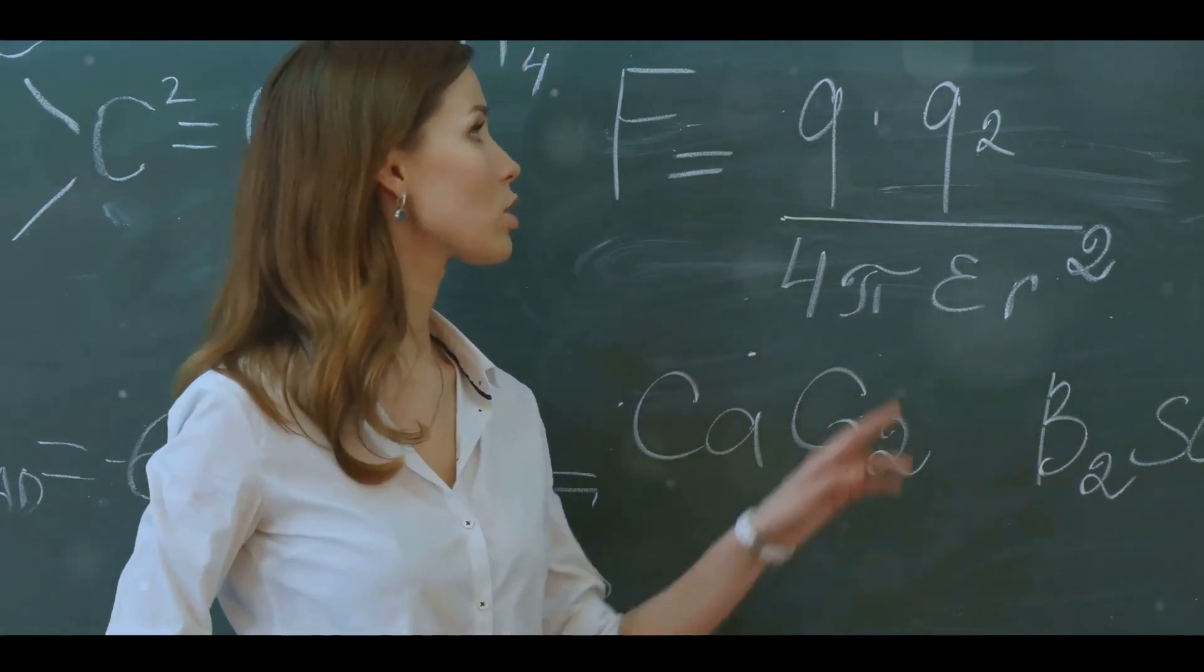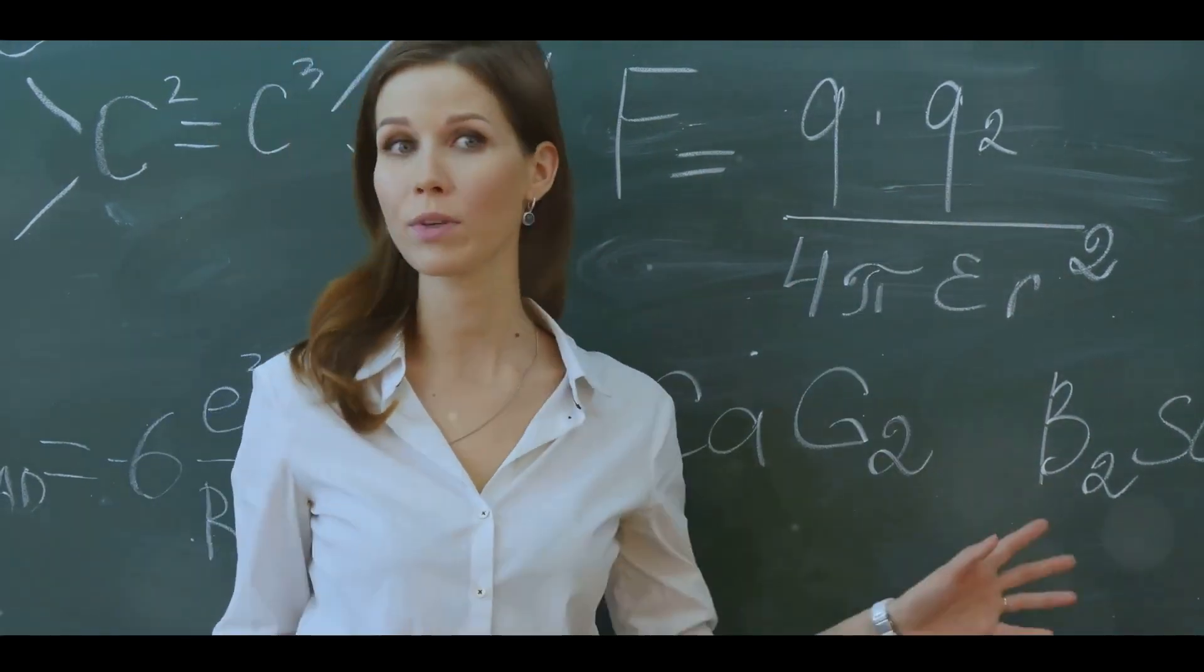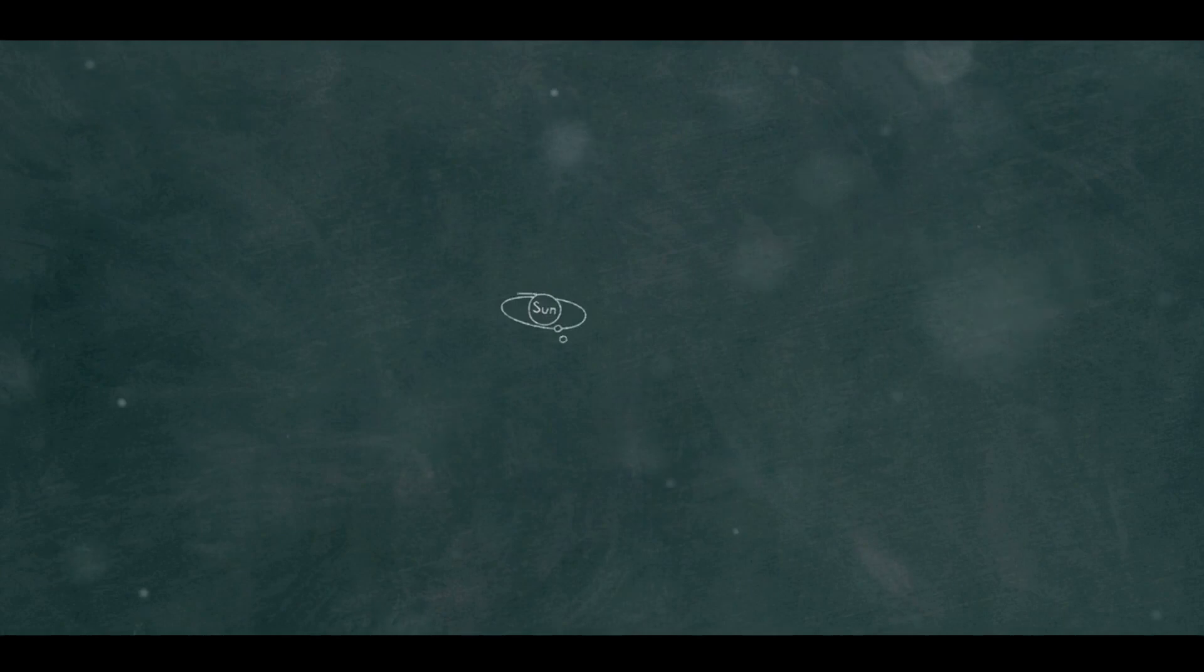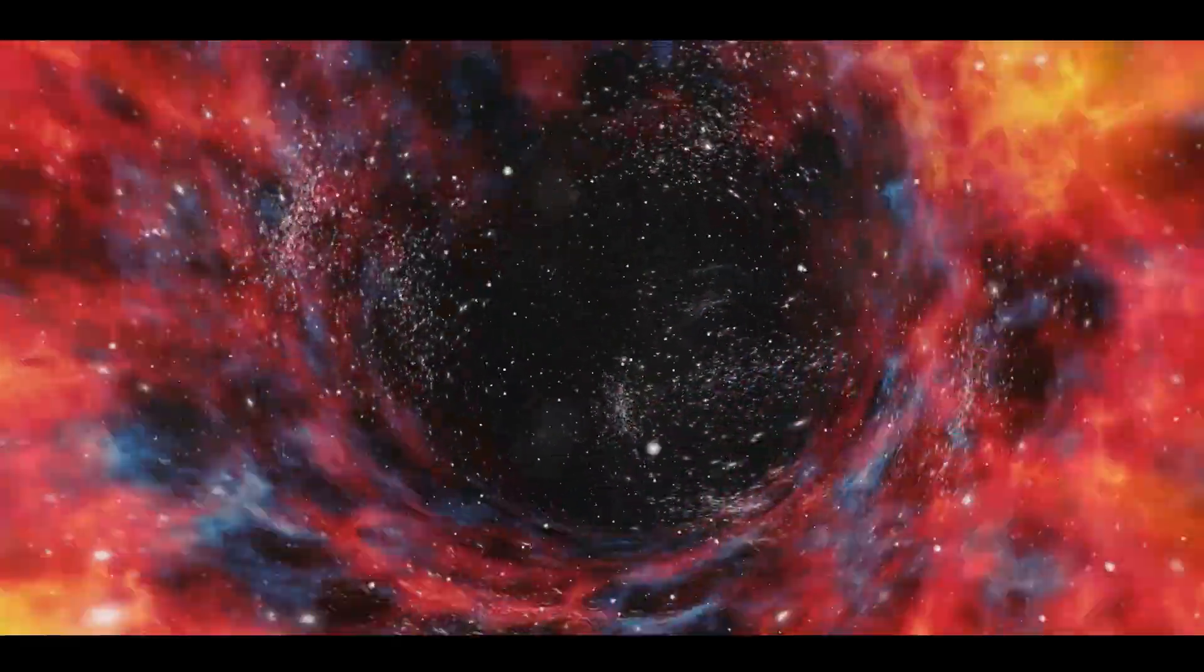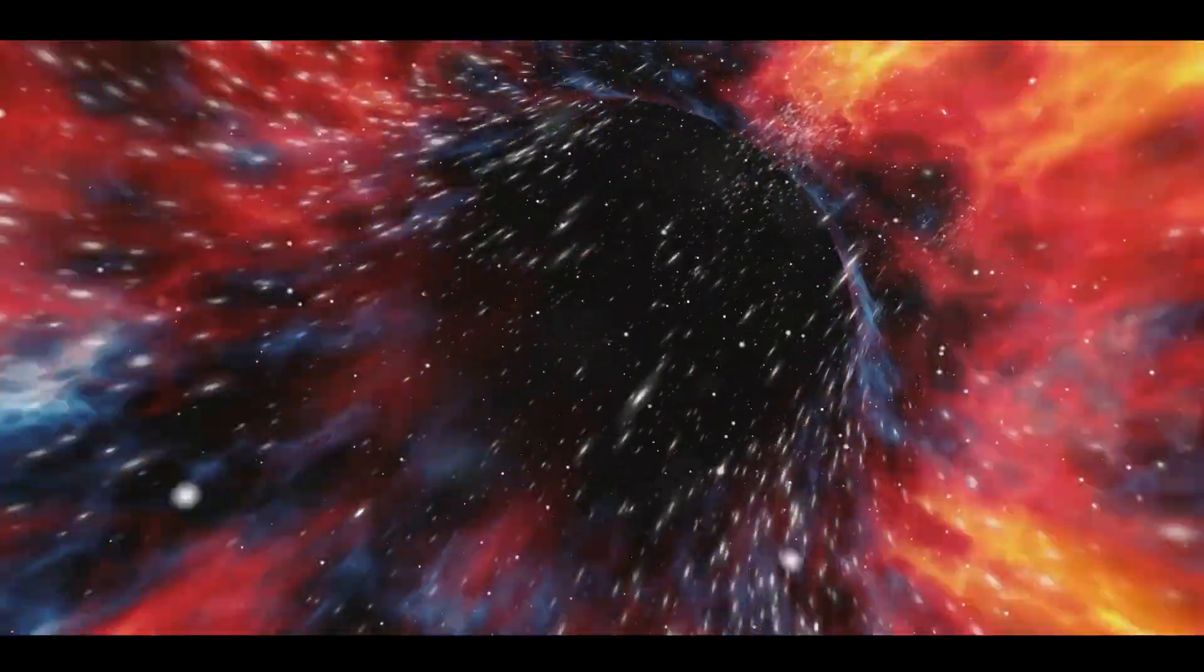Then we have the loop quantum gravity theory. This theory aimed to reconcile quantum mechanics and gravity by quantizing space and time itself. It proposed that space is made up of tiny, indivisible loops that form a sort of fabric for the universe.